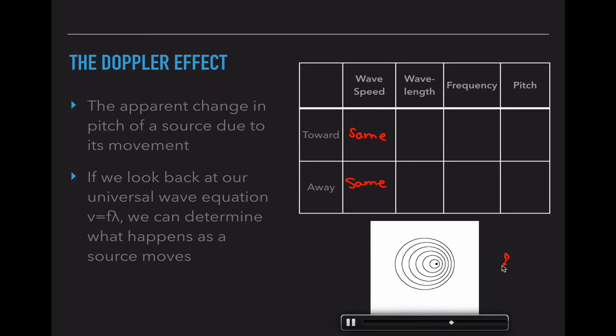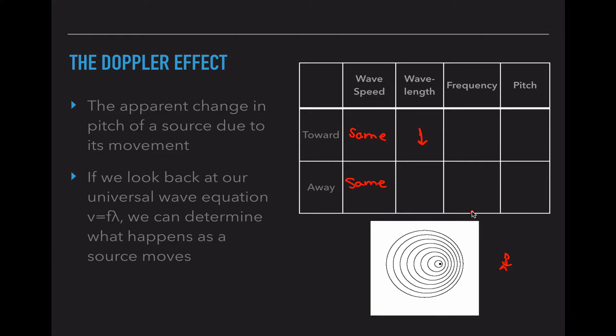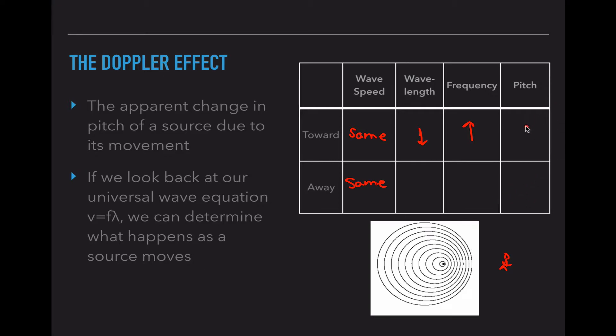If we're standing over here, the wavelength, as this object moves towards us, is actually going down. Compared to our stationary object, the wavelength is smaller as the source or the sound moves towards us. If the wavelength is going down, and we use this equation v equals f times lambda, if lambda goes down and v has to be the same, that means our frequency has to increase. And if the frequency increases, that means the pitch also has to increase, because those two things are related.